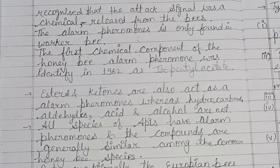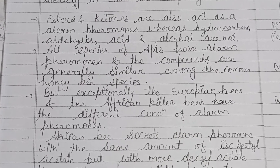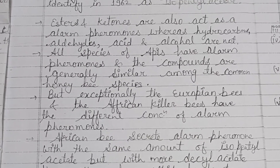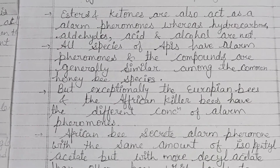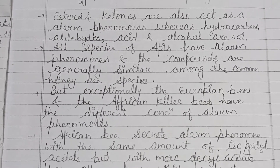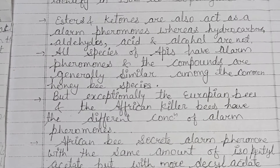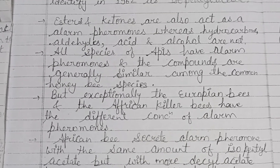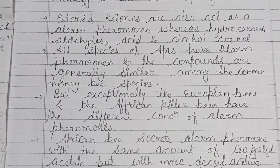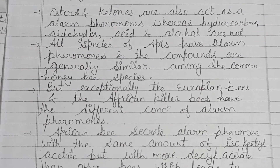The first chemical component of the honeybee alarm pheromone was identified in 1962 as isopentyl acetate. It was later determined that this was only one component of the alarm substance. Esters and ketones of 13-carbon chain length seem to be effective as alarm pheromones in Apis mellifera, whereas hydrocarbons, aldehydes, acids, and alcohols are not.